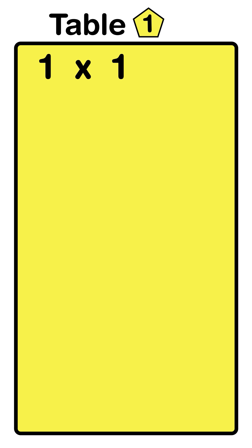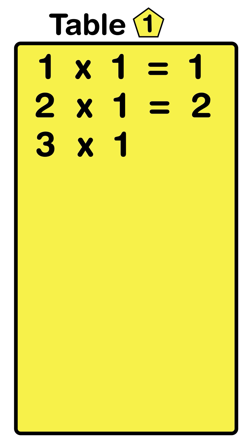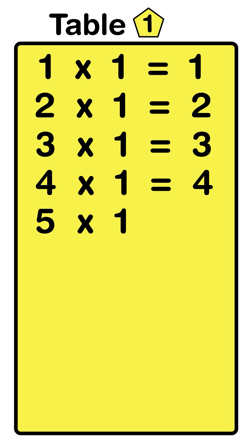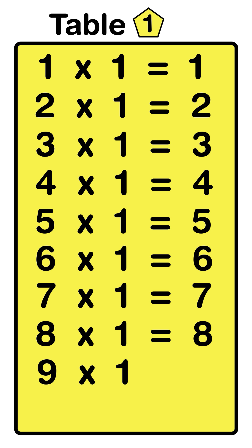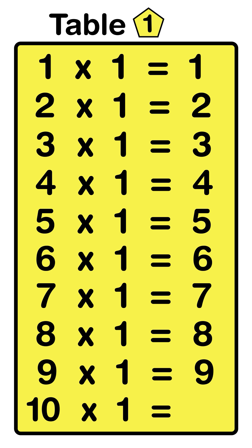One one's are one, two one's are two, three one's are three, four one's are four, five one's are five, six one's are six, seven one's are seven, eight one's are eight, nine one's are nine, ten one's are ten.